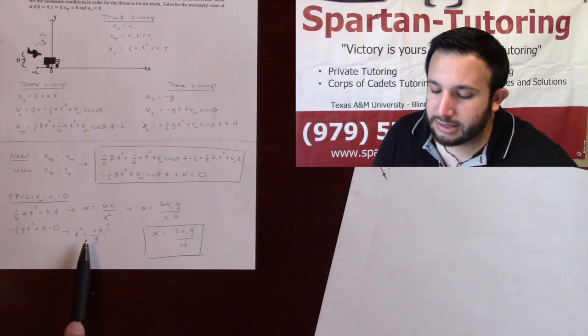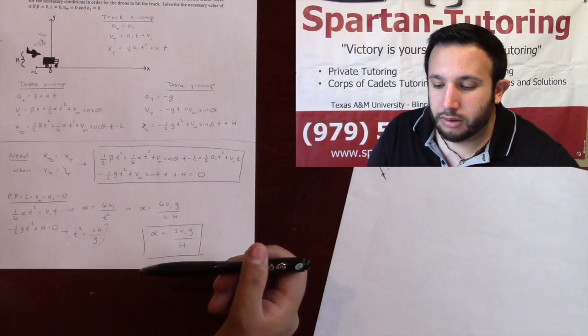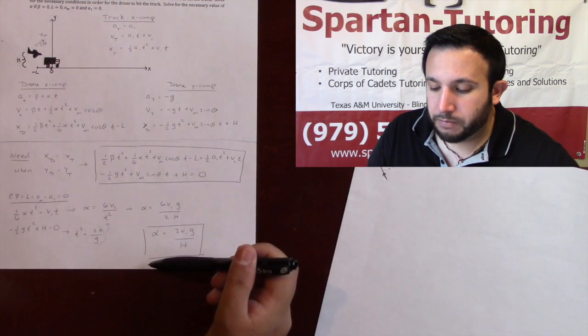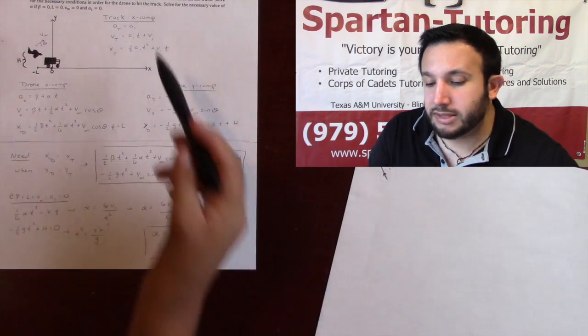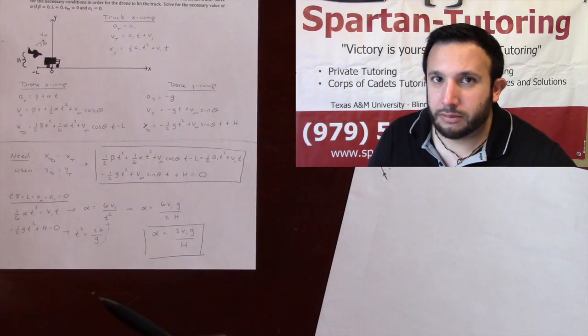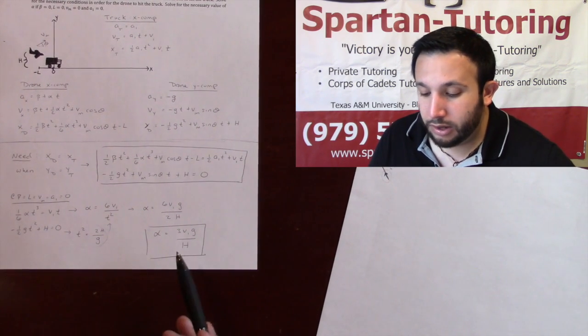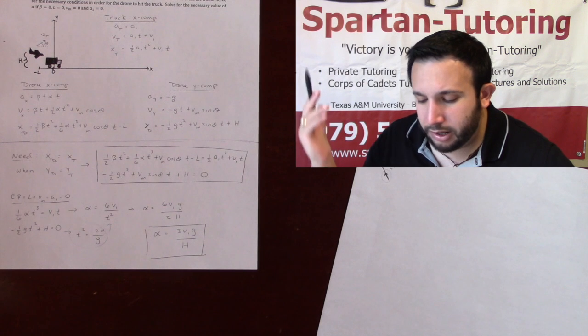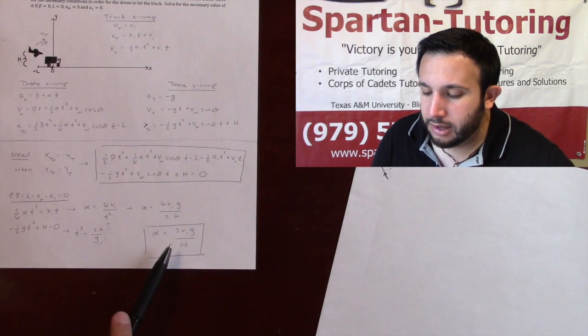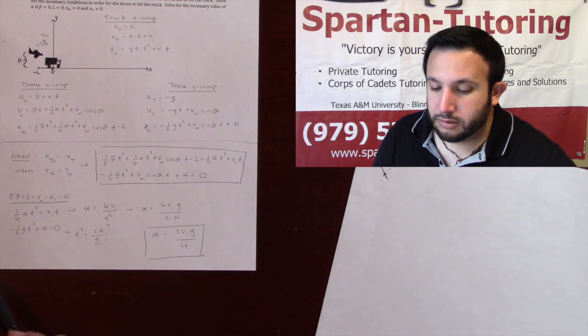Which is great because now I can put t squared in terms that are known. Very important that all your final answers are in terms that are known. Unless it says obtain an equation that could solve for it. Whenever you solve for something, your final answer better have terms that are given or known. If not, then you need to put it in terms of that. But anyways, plugging 2h over g into the denominator, it simplifies to 3v1g over h.